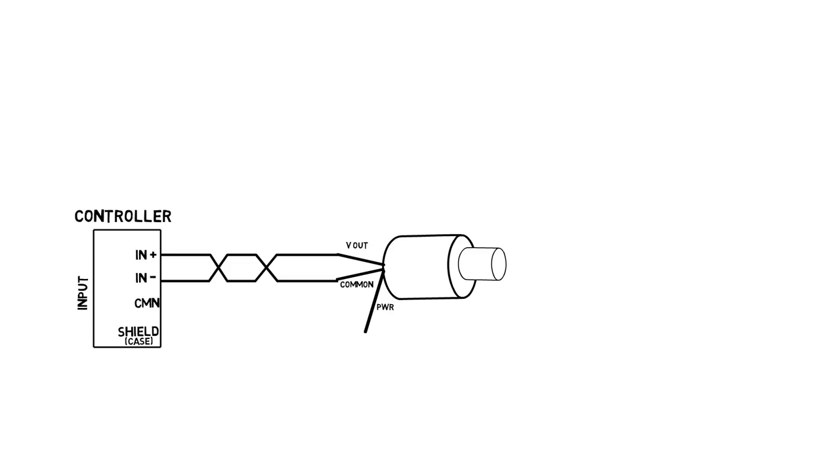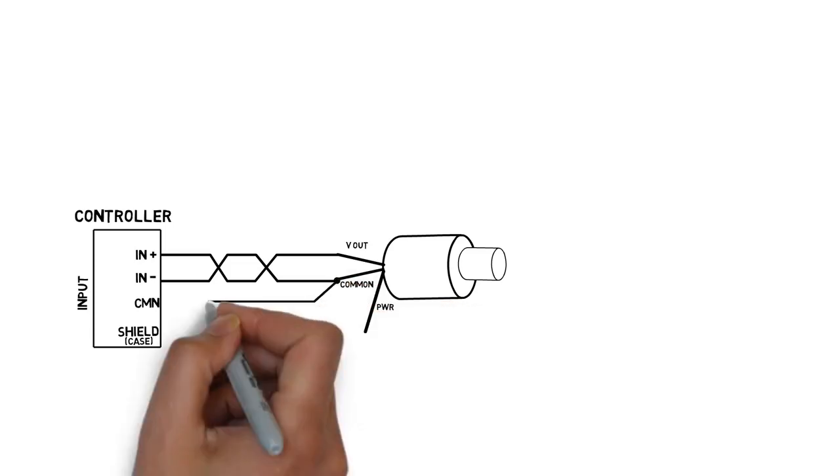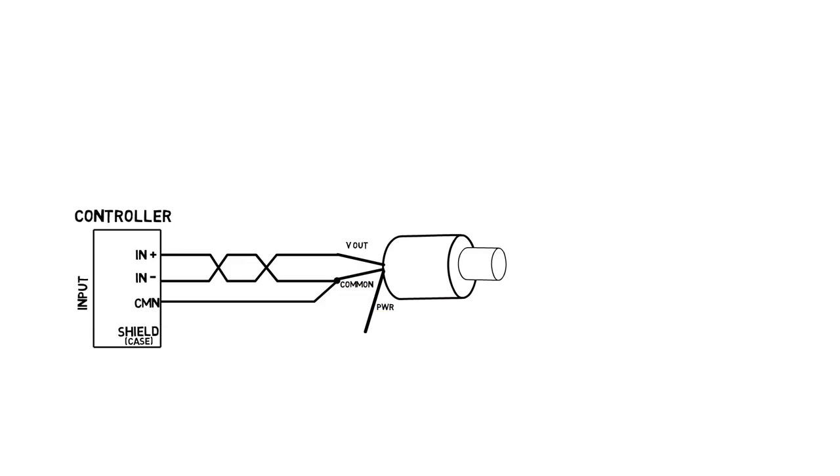Connect another wire from the sensor common to the input common. This is very important if the controller's input is isolated.